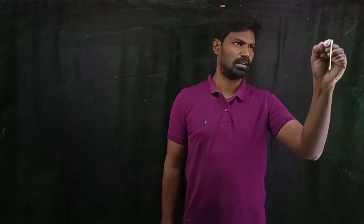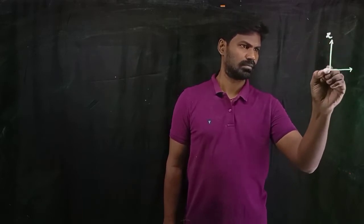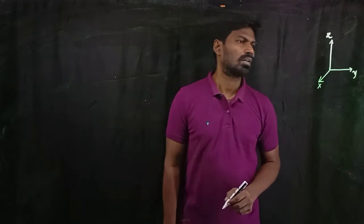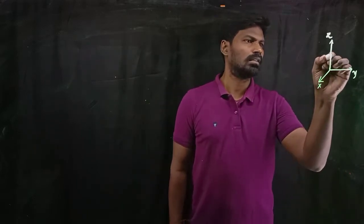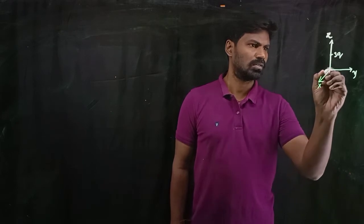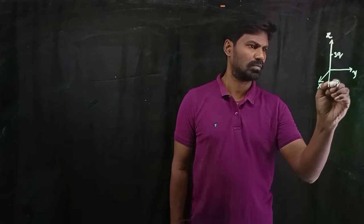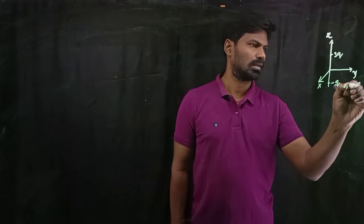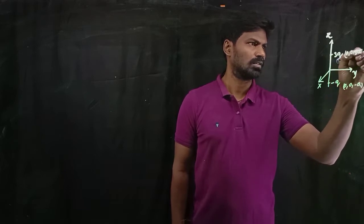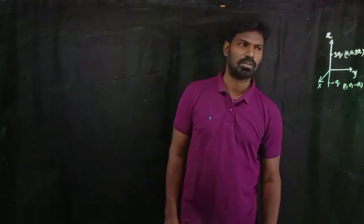Here, this vertical axis I'm taking as the Z axis, this axis as the X axis, and this as the Y axis. At a distance A from the origin there is a charge 3Q, with coordinates (0, 0, A). Another charge at minus A has value minus Q, with coordinates (0, 0, -A). For this configuration, I need to calculate the monopole, dipole, and their corresponding potentials.